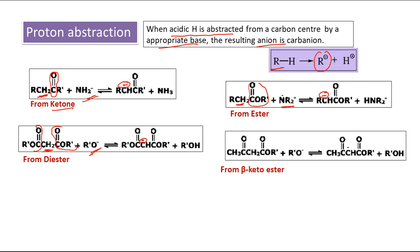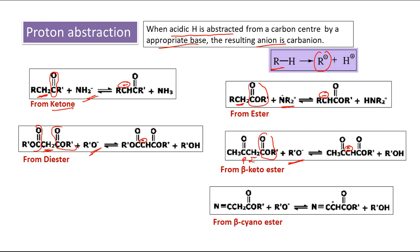The third type of starting material is a beta-keto ester. With respect to the ester group, the alpha position and beta position are identified — at the beta position there is a keto group, hence beta-keto ester. In the presence of a base, hydrogen is removed and a negative charge is generated over carbon. The fifth type is a beta-cyano ester: the cyano group at the beta position is also electron-withdrawing, so we again get negative charge over this carbon.